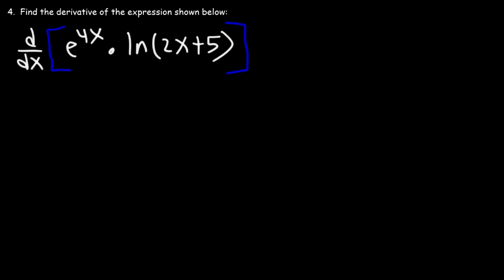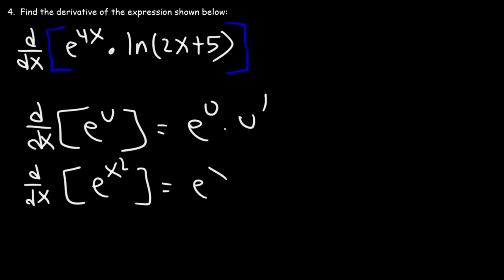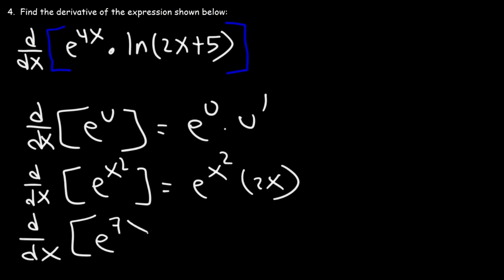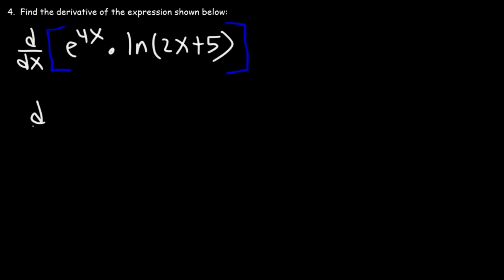Number four: find the derivative of the expression shown below. You need to know how to differentiate exponential functions, logarithmic functions, and how to use the product rule. The derivative of e to the u is e to the u times u prime. For example, the derivative of e to the 7x is e to the 7x times 7.